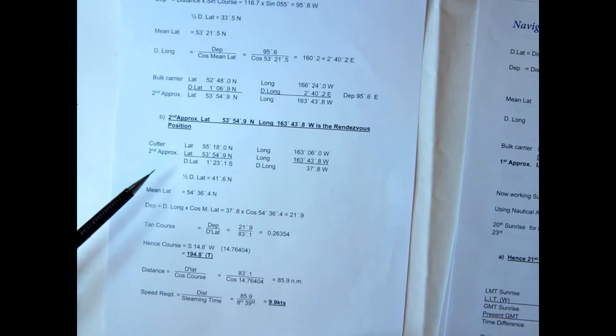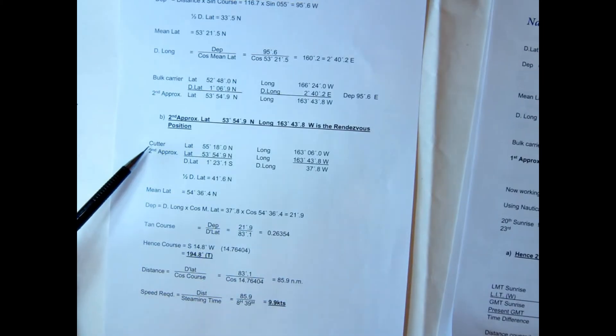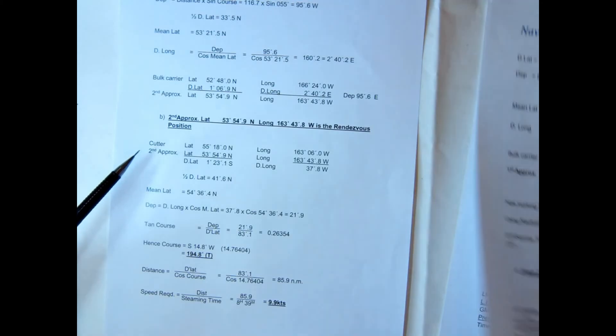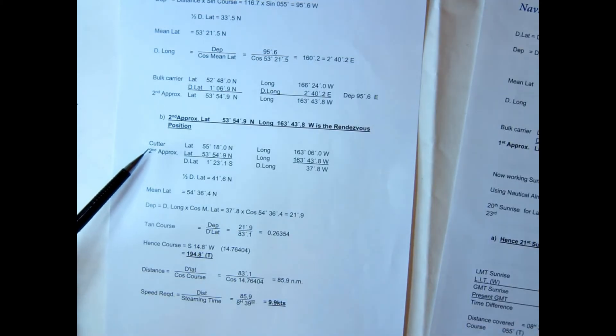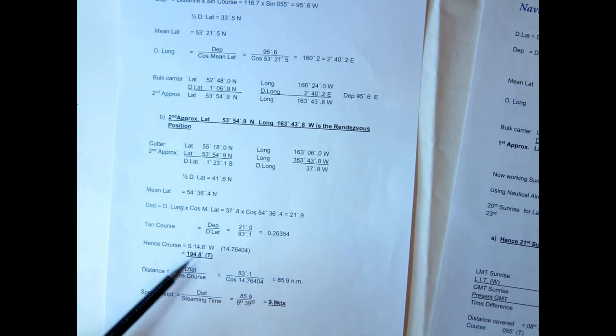The last question said, well what course and speed will the coast guard cutter have to do to make the rendezvous? So what we have to do is use the second approximate position and the cutter's present position to work out the course and then the distance. So we've got the course and distance, but they've actually asked for what speed we have to do. Well we know the steaming time, it's 8 hours 39 minutes. We know we've got to cover 85.9 miles, so that will tell us that the speed required is 9.9 knots.